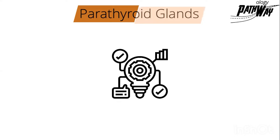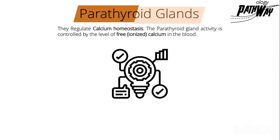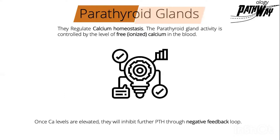I will start by the function of the parathyroid hormone. The parathyroid hormone regulates calcium homeostasis, and the parathyroid gland activity is controlled by the level of free ionized calcium in blood. When calcium levels are elevated, this creates a negative feedback loop which inhibits further parathyroid hormone secretion.